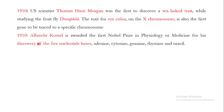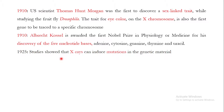In 1910, the Nobel Prize in Physiology and Medicine was awarded to Kossel for the discovery of the five nucleotide bases: adenine, cytosine, guanine, thymine, and uracil. Then in 1925, it was concluded that X-rays can induce mutations in the genetic material, including DNA and RNA.